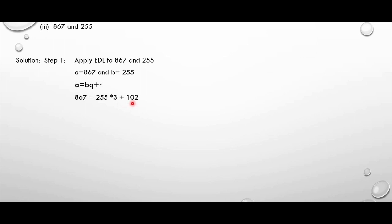Moving on to the third question, we have 867 and 255. In step 1, we apply Euclid's division lemma to 867 and 255. The greater number is 867 and the smaller is 255. Therefore a equals 867 and b equals 255. We apply the formula a equal to bq plus r. We get 867 equal to 255 into 3 plus 102. If you don't get this, divide 867 by 255 — you will get quotient as 3 and remainder as 102.